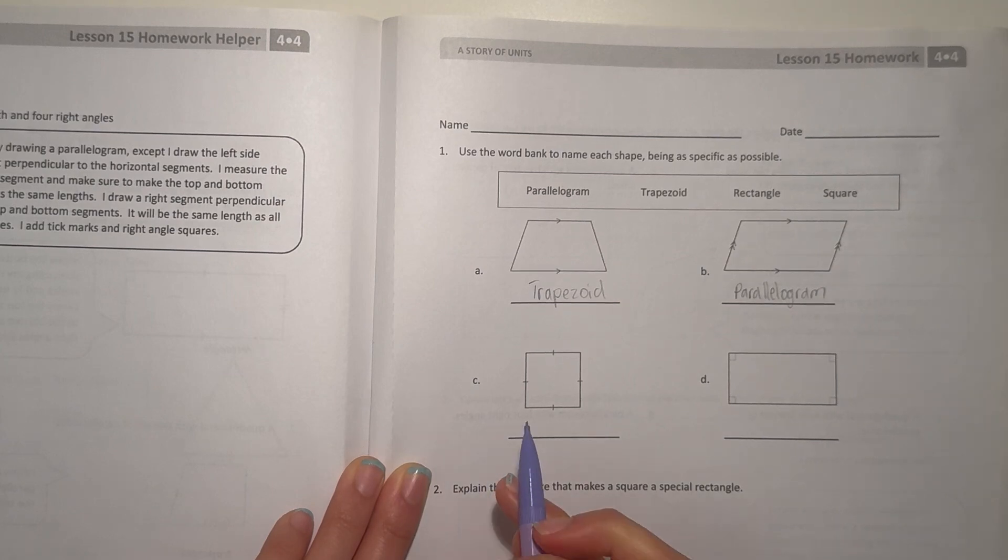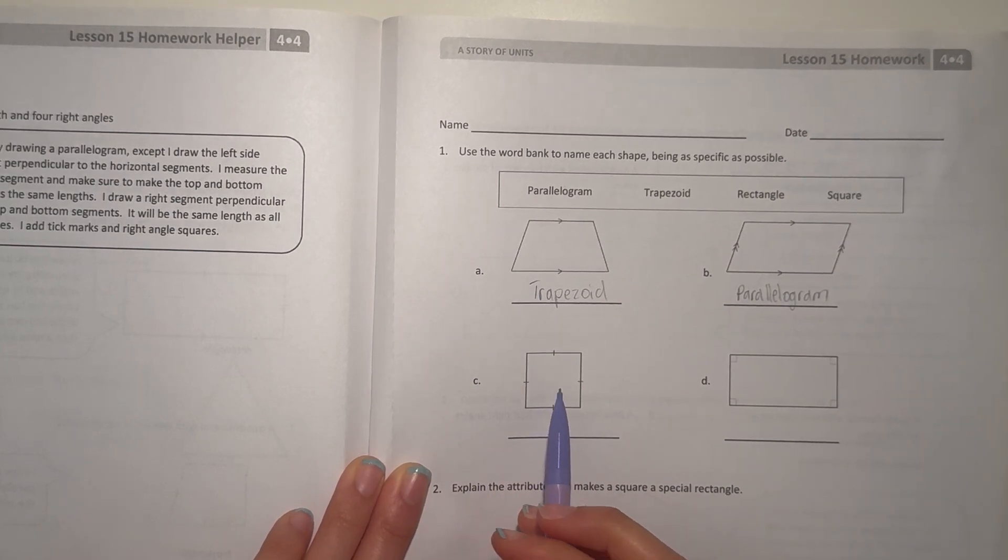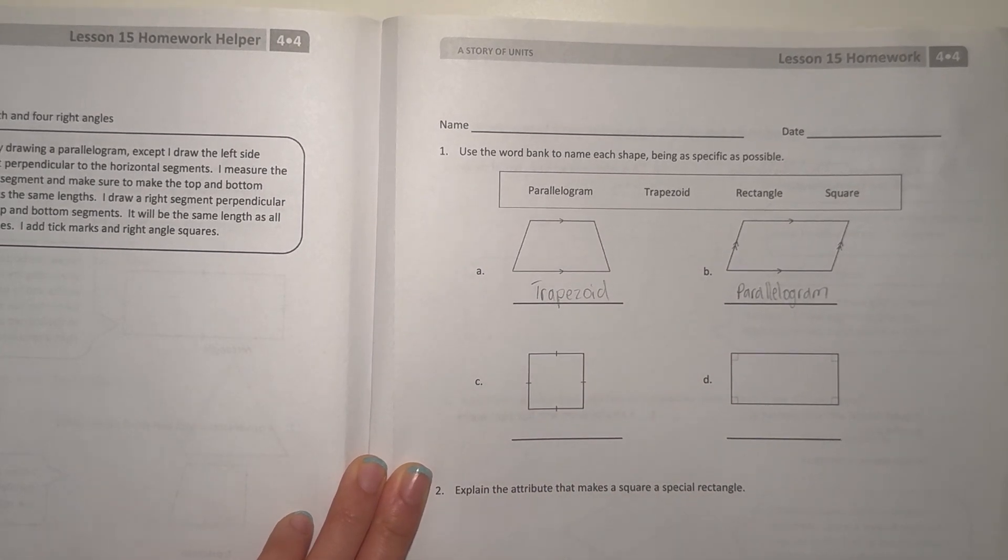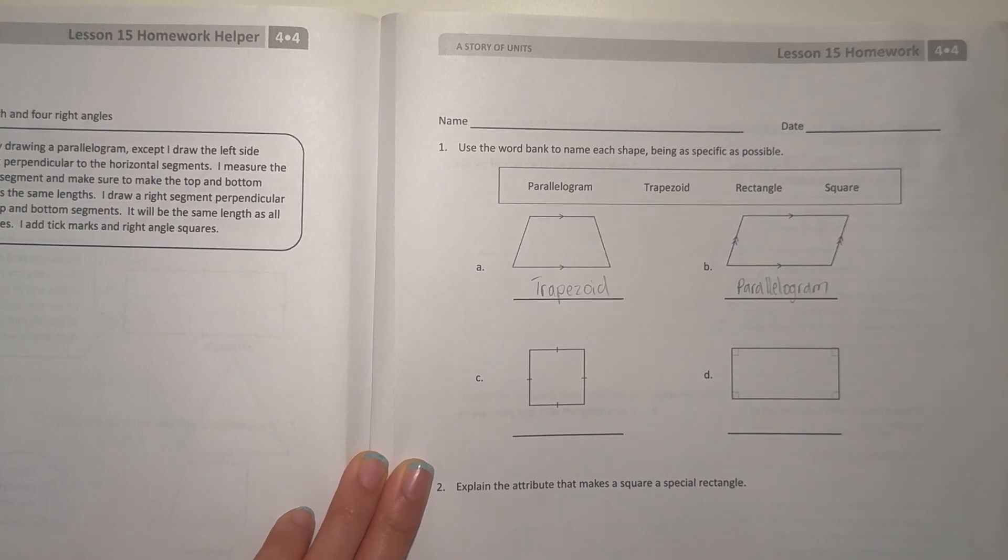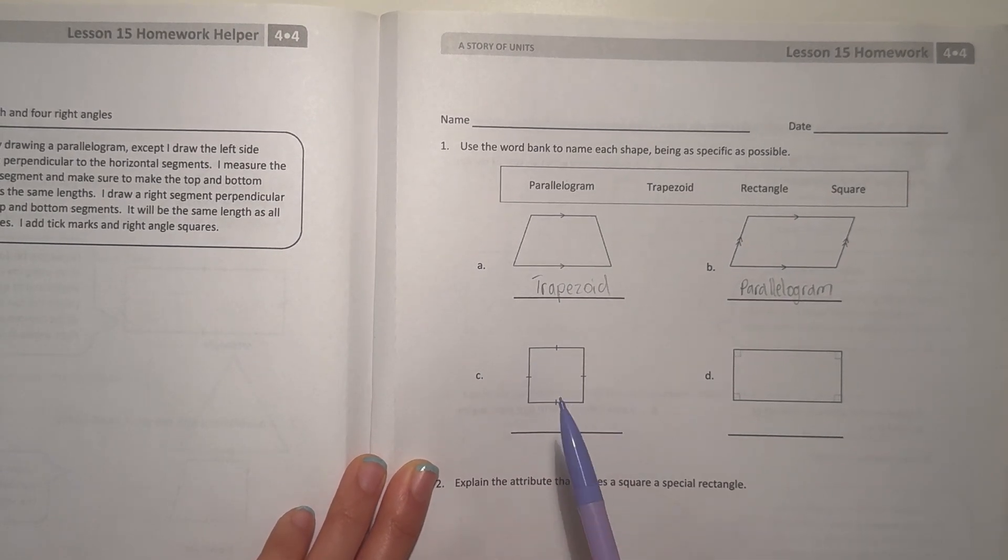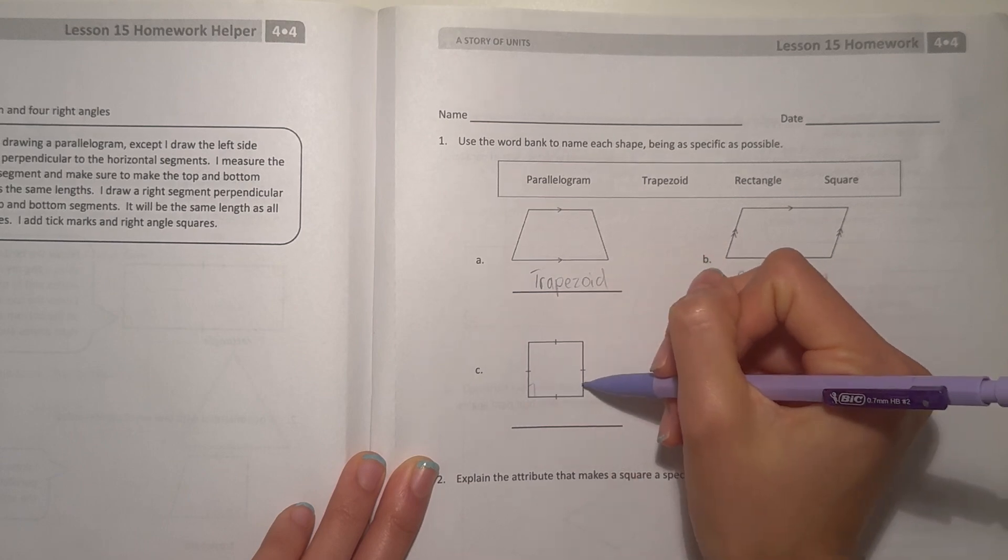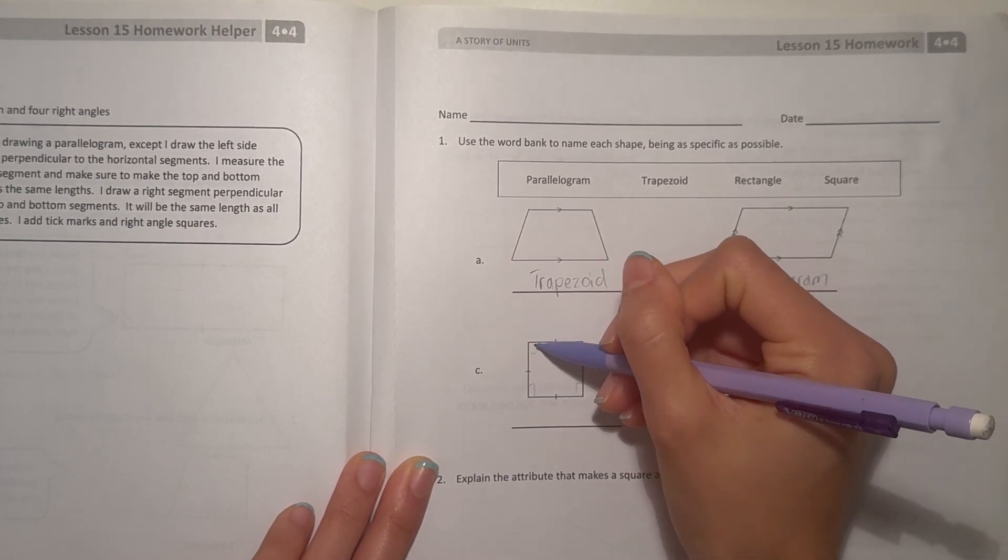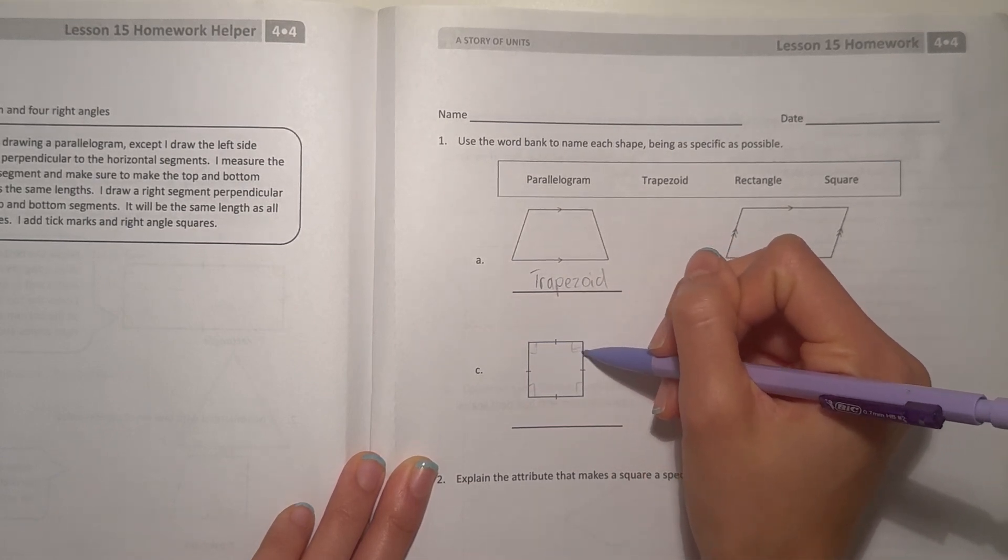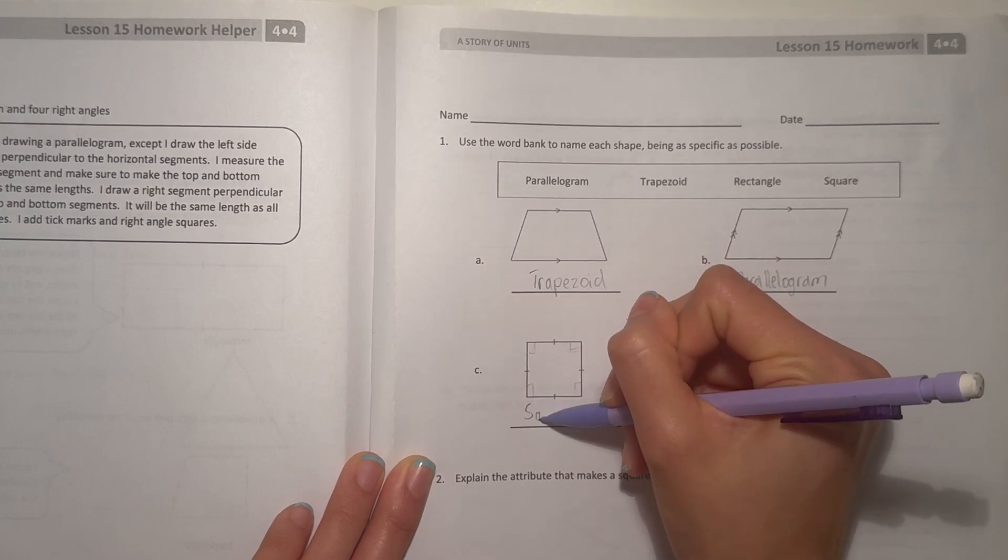And for C, this is a rectangle technically, but it's a special type of rectangle. It's a square. Because it has four equal sides and four right corners, but all sides are equal and parallel. So, this is a square.